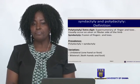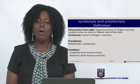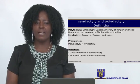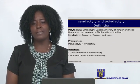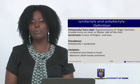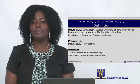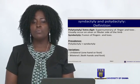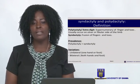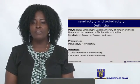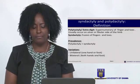When it comes to prevalence, we have more occurrences of polydactyly — that is, extra digits — than occurrences of syndactyly, which is the fusion of fingers and toes. The variations include unilateral, where one hand or one foot is affected, and bilateral, as seen in the picture, where both hands and feet are affected.